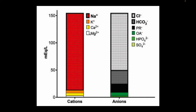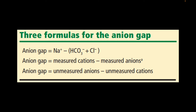Potassium, calcium, and magnesium are not usually measured. Apart from chloride and bicarbonate, the other anions not usually measured include sulfate, phosphates, organic acids, and proteins. There are three formulas for anion gap calculation; the most commonly used is sodium minus the sum of bicarbonate and chloride.